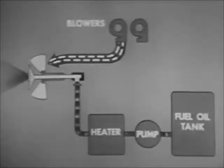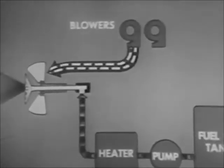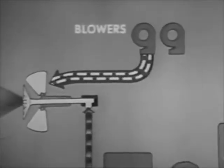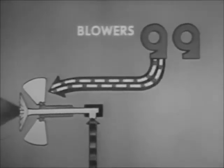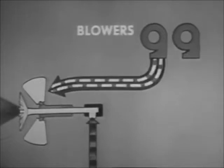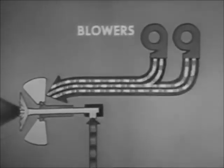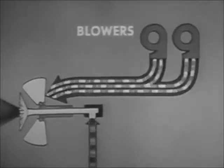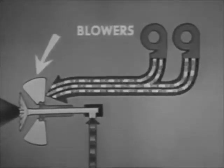Controlling the forced draft blowers is the principal method of controlling the quantity of air reaching the burner. For example, to increase the air a moderate amount, you increase the speed of the blower in service. Or, if even more air is needed, you cut in another blower. You can make minor adjustments in the air supply with the air doors.